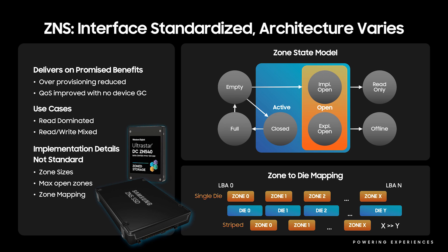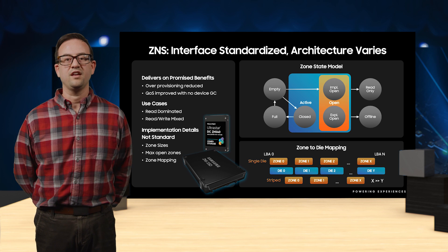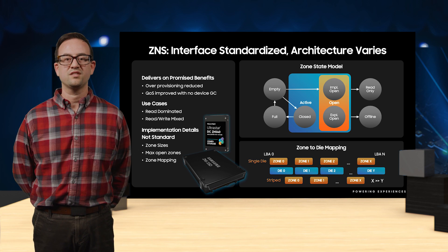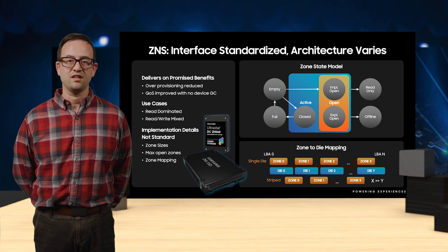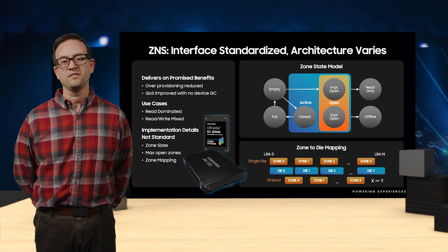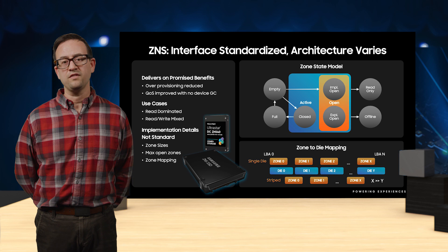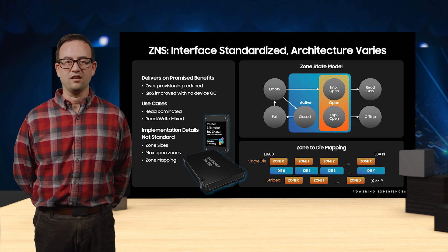To illustrate the concept of active and open zones, draw your attention to the state model diagram representing state transitions possible for ZNS zones. Zones start off in the empty state and are transitioned to the open state with a write or with an explicit open command. Open as well as closed zones are in the active state, requiring online device resources to maintain state. A zone can be transitioned out of the active state by being marked as read-only, set as full, or marked as offline.